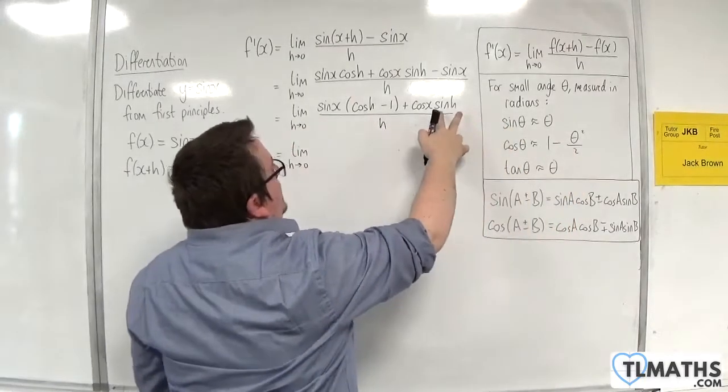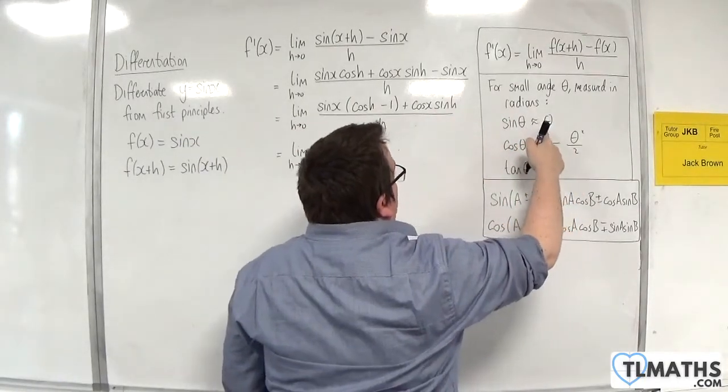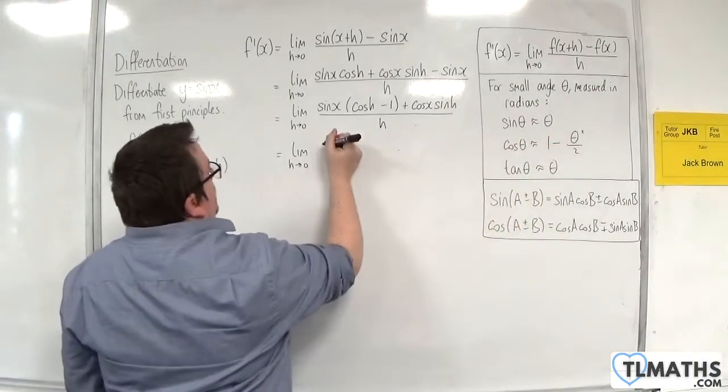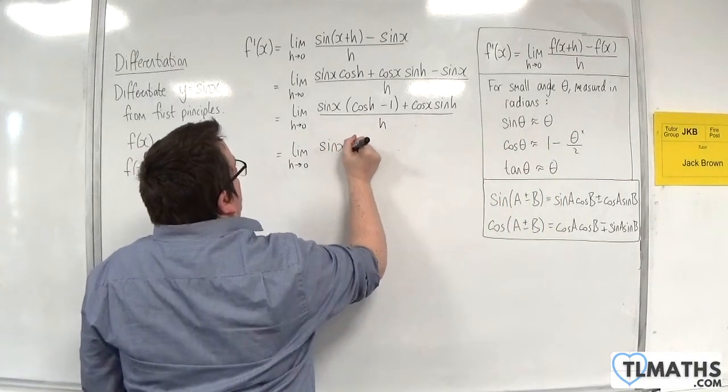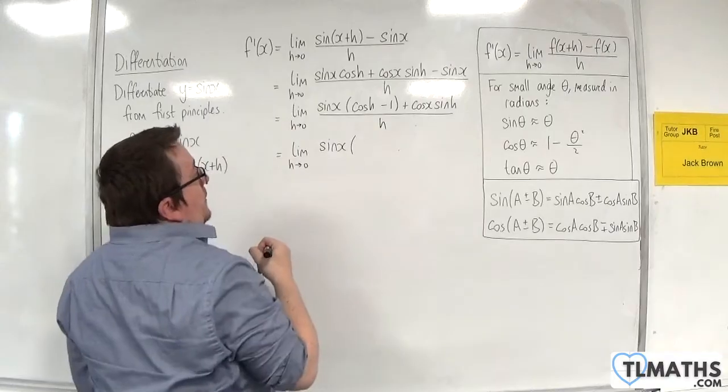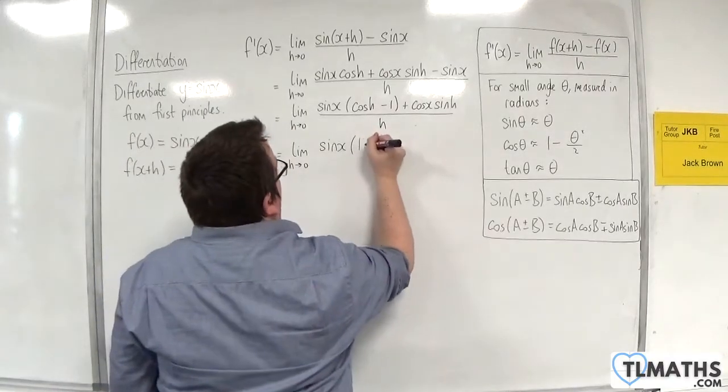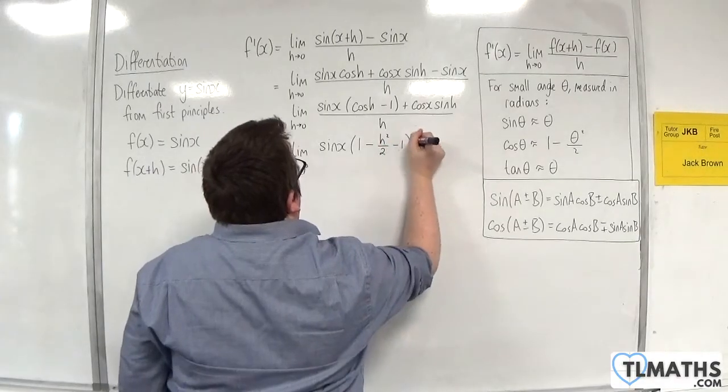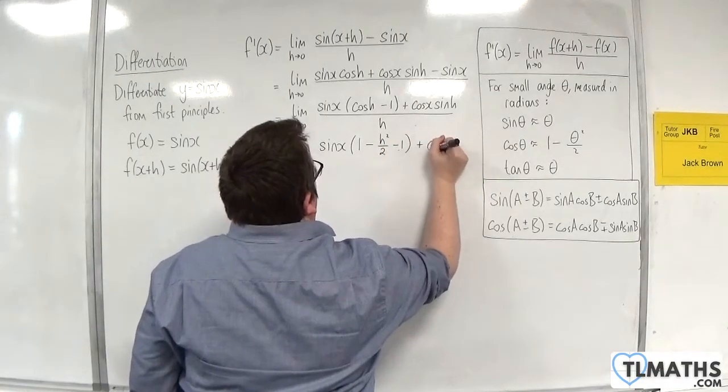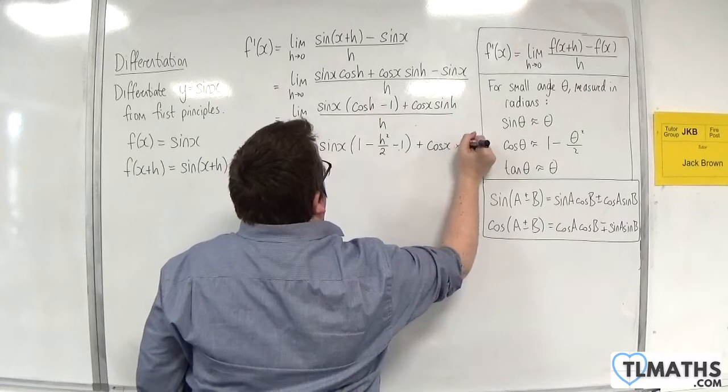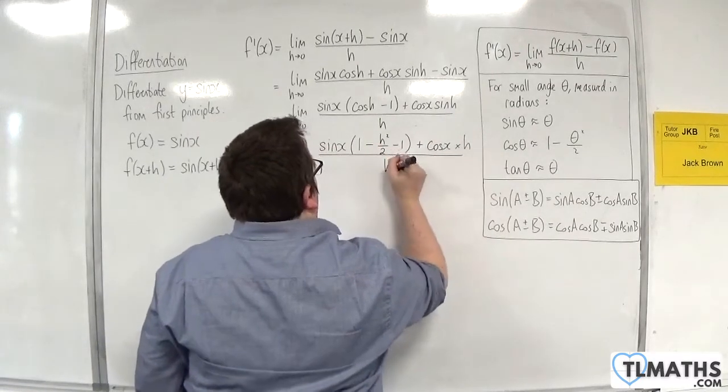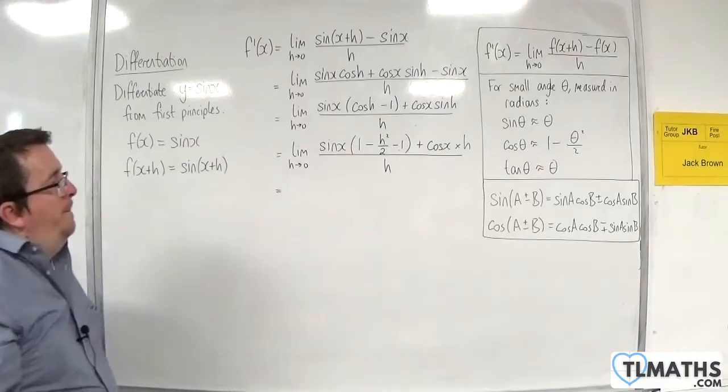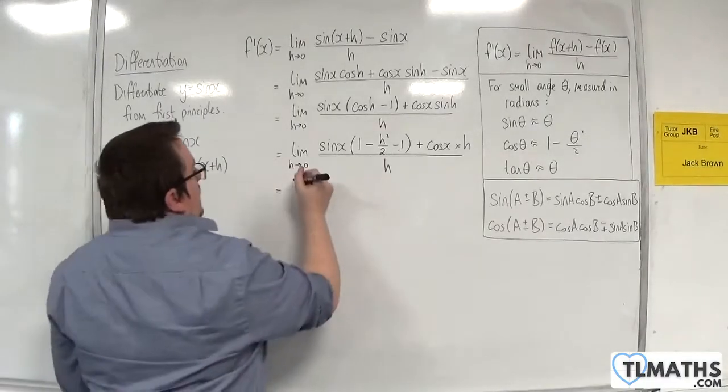And sin of h will get closer and closer and closer to just h. So I'm going to get towards sin x times 1 take away h squared over 2 take away 1 plus cos x times h over h.